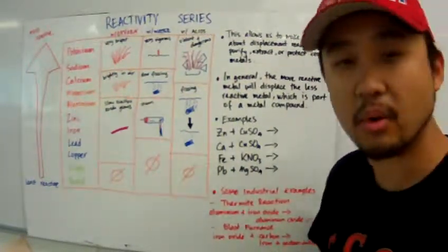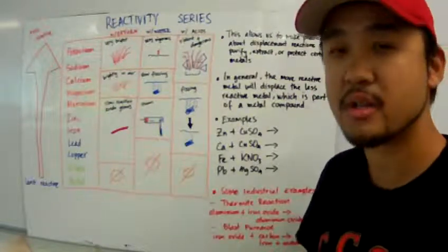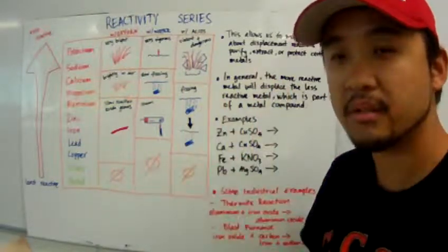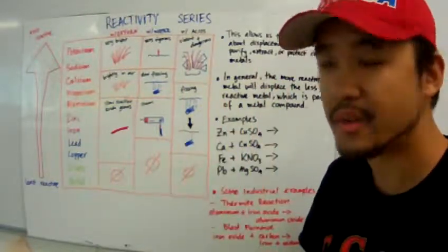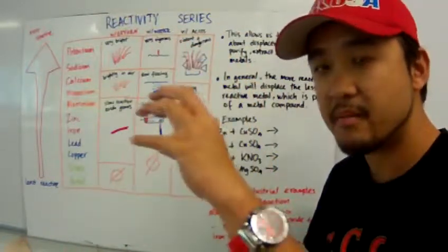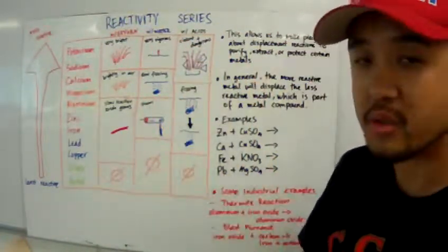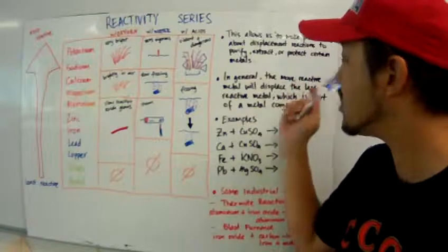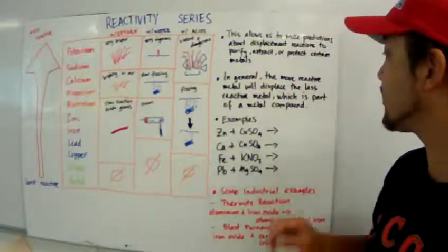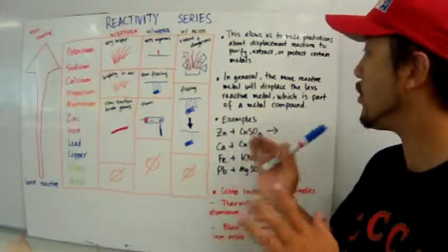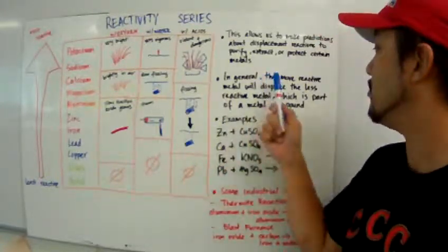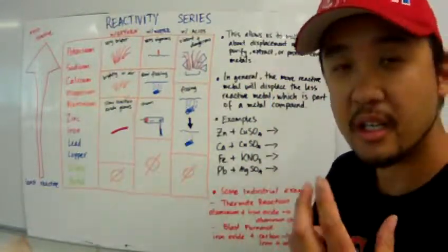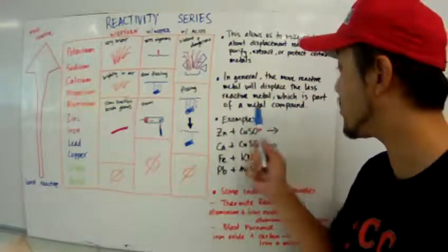So, why is this important? This is important because we would like to make predictions when we do metal displacement reactions. What does that mean? This is one metal displacing another metal element from its compound. The reason we do that is because we want to purify, extract, or to protect certain metals. In general, when we want to do a prediction, the more reactive metal will displace the less reactive metal in which the less reactive metal is part of the metal compound.